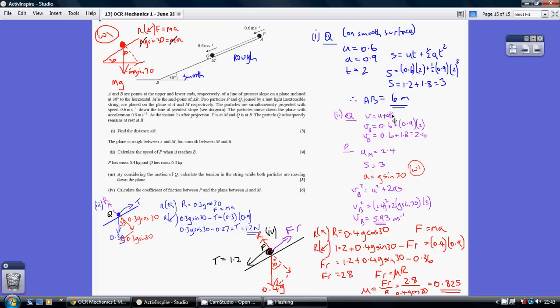v equals u plus a t, so the speed of q when he gets to b is the initial speed of 0.6 plus a the acceleration of 0.9 times the time of 2, tells us that the speed of q when he gets to b is 2.4. When we move on to looking at p's journey from m to b his initial speed, his speed at m is 2.4. That's the key bit.